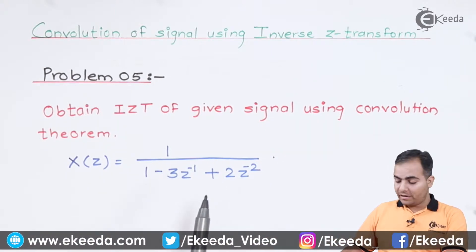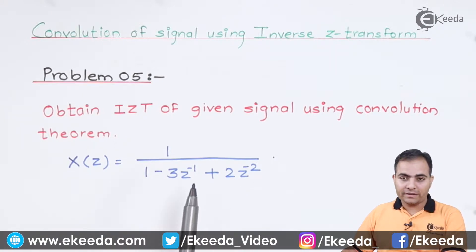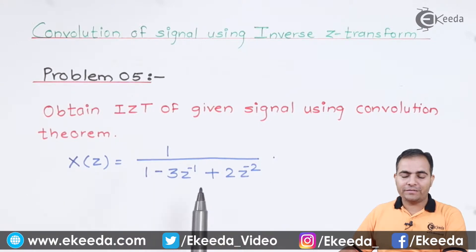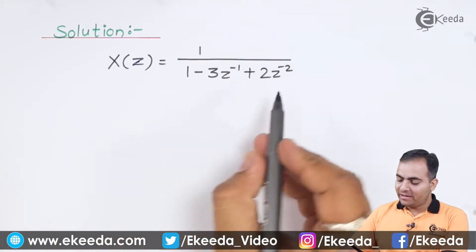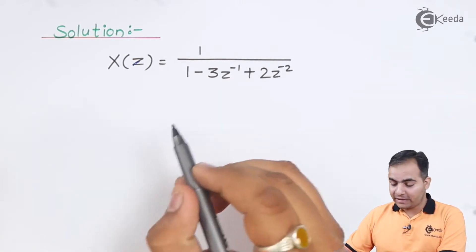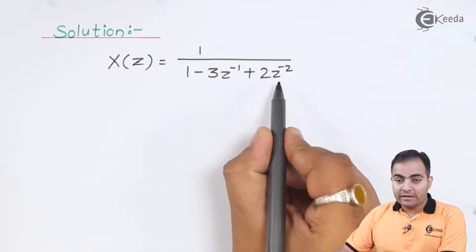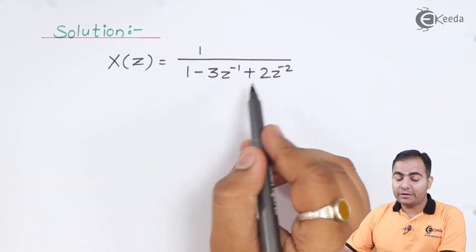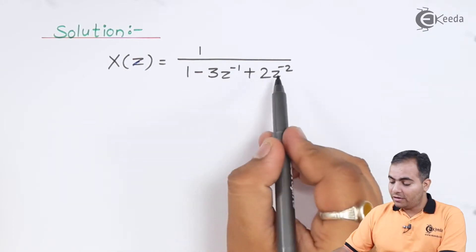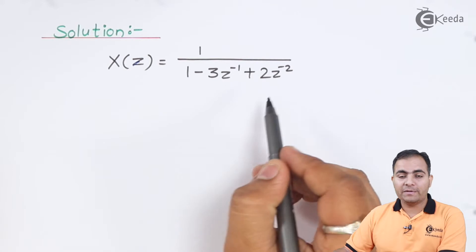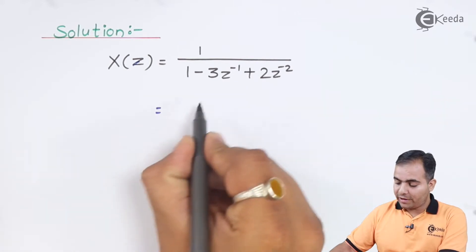So first of all, what is our aim? In this type of question, we will write the expression in positive powers of z. Let us see how to convert this whole function into positive power of z. The lowest power of z present is minus 2.